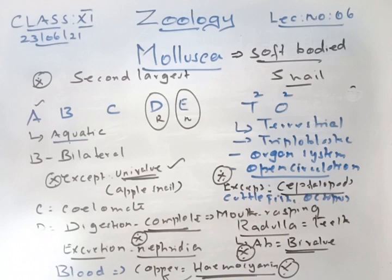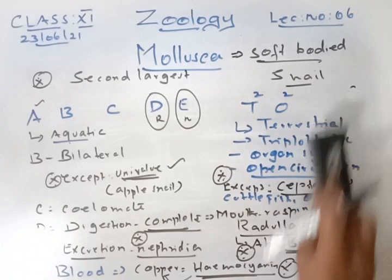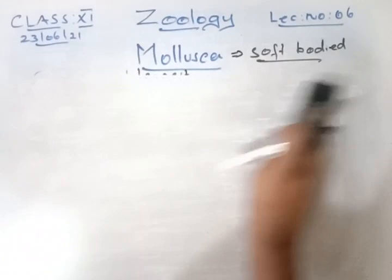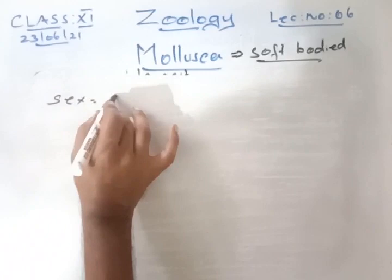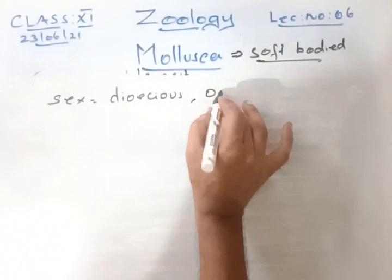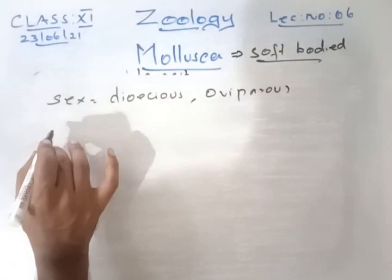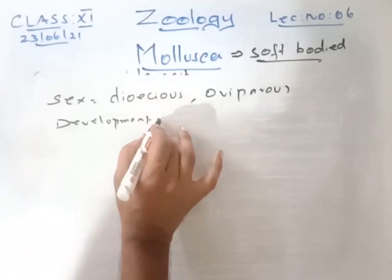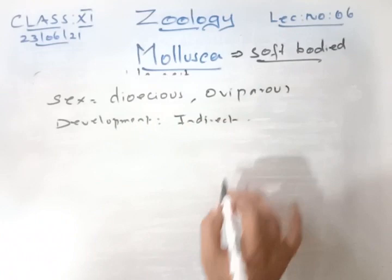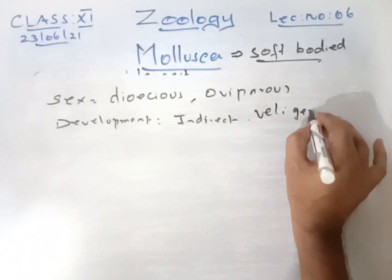The sex in Mollusca is dioecious and they are oviparous. Development is indirect — they have a larval stage. The larva is called the veliger larva, which is very important.